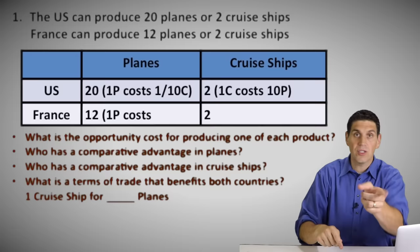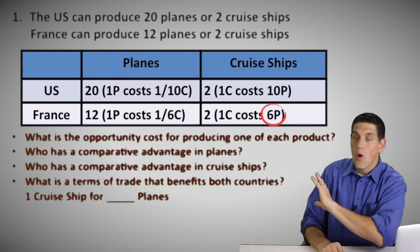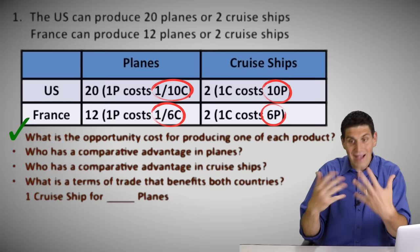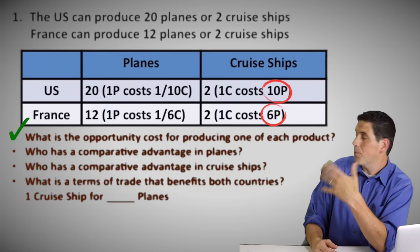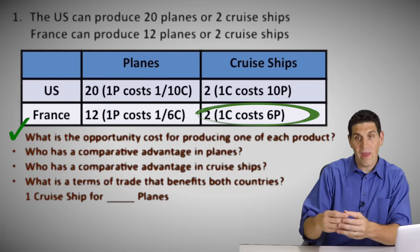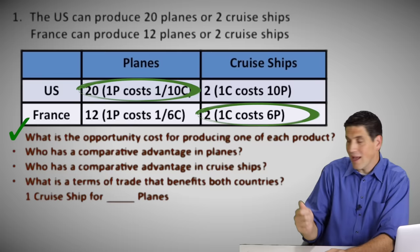For France, each one plane costs one-sixth of a cruise ship, and each one cruise ship costs six planes. Now we've got the calculations done — that's the opportunity cost of producing each one. Now we have to figure out who has a comparative advantage in planes and who has a comparative advantage in cruise ships. On the cruise ship side, who should produce cruise ships — the one that gives up 10 planes or the country that gives up six planes? Six planes is a lower opportunity cost. France has a comparative advantage because they have a lower opportunity cost when producing cruise ships. The United States has a lower opportunity cost in planes, so the United States should specialize in making planes.